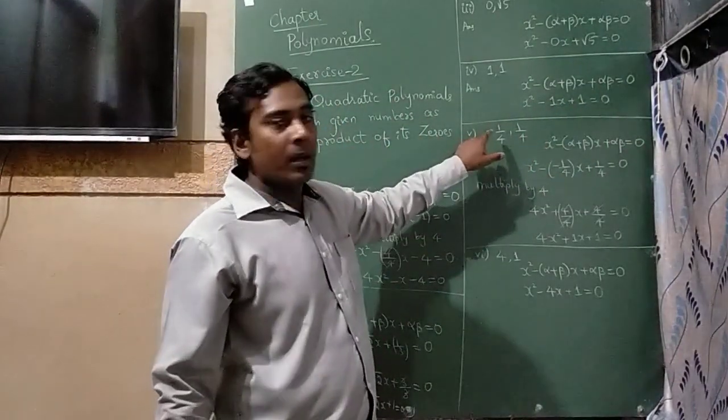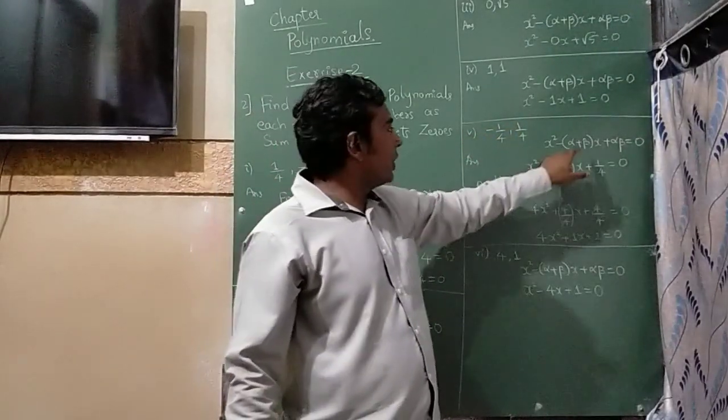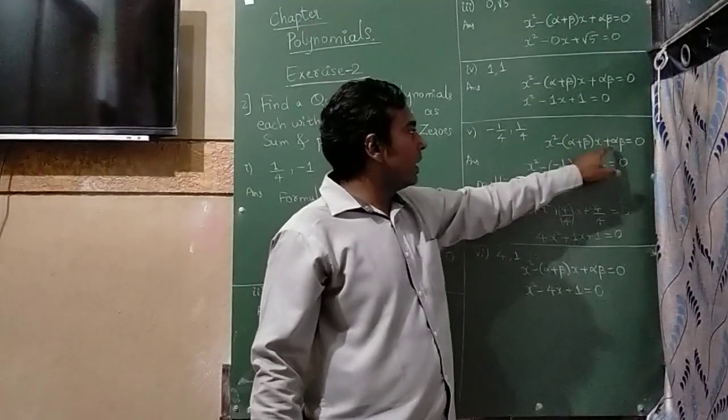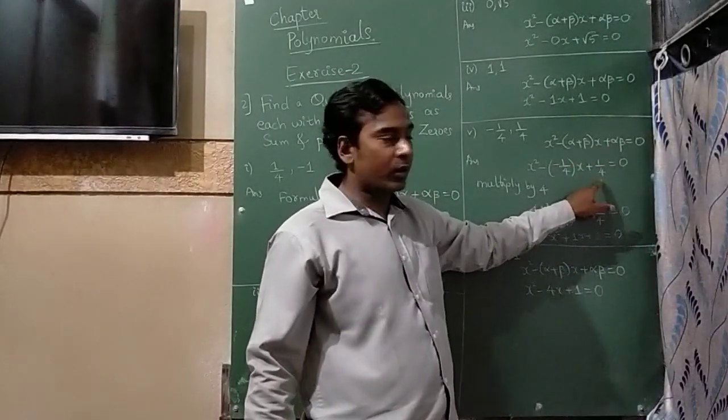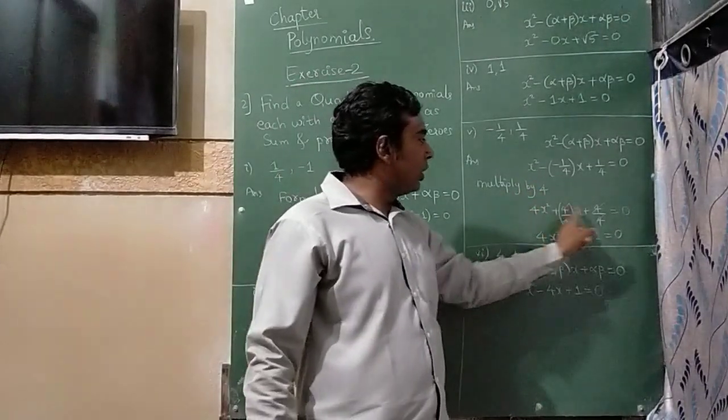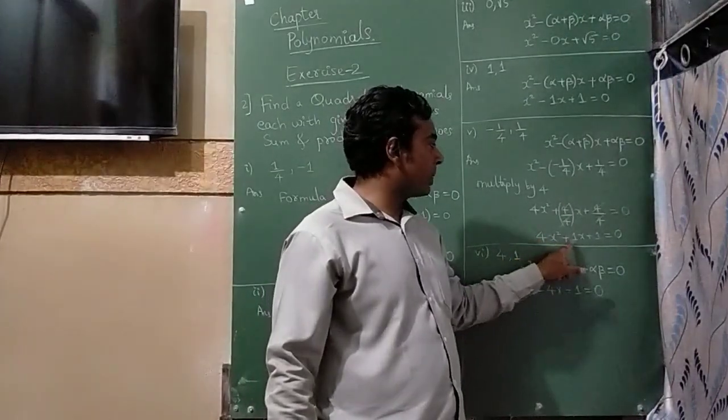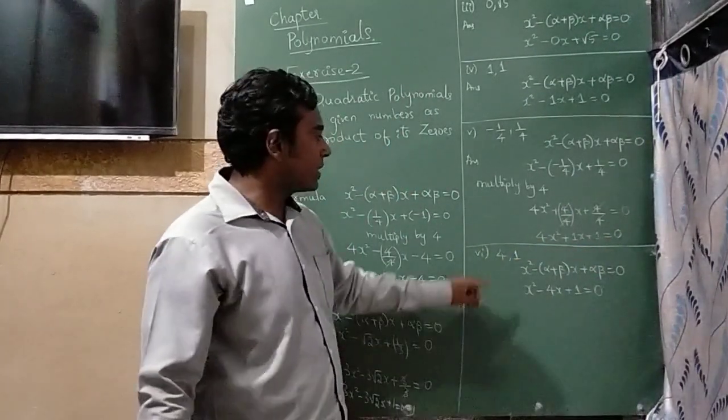In the fourth question, -1/4 is the sum, 1/4 is the product. So in place of α+β, I will write -1/4. In place of αβ, I will write 1/4. Since the denominator is 4, I will multiply by 4. I will get final answer as 4x² + x + 1 = 0.